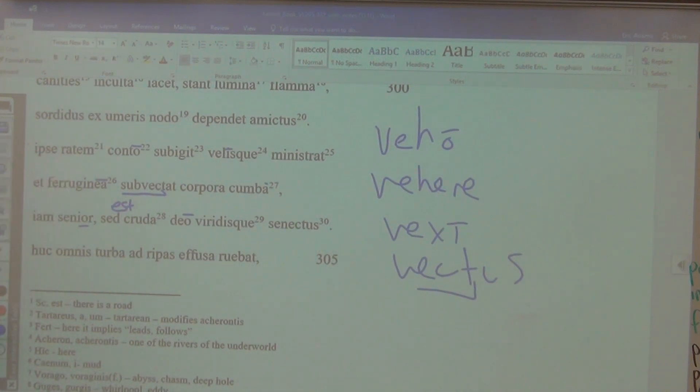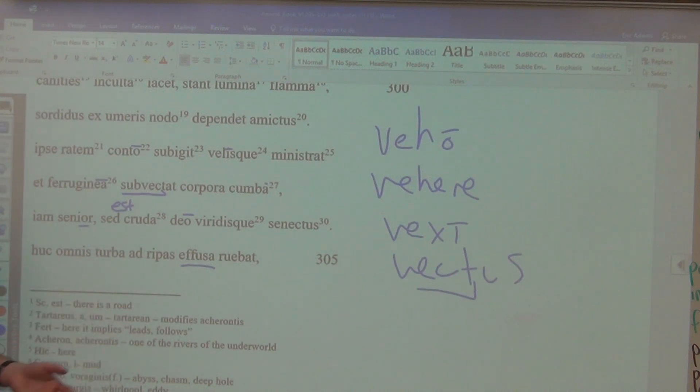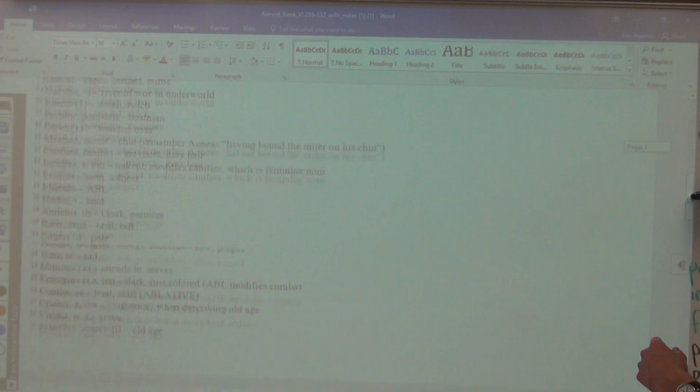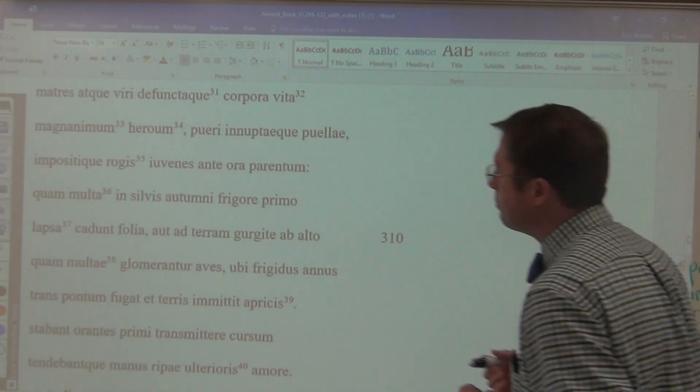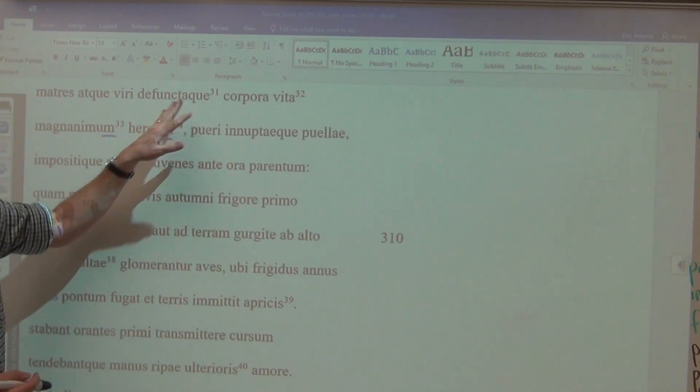To this place, indicating where he is located, the whole crowd, having been poured out, fundo fundere fudi fusus meaning to pour out, a perfect passive participle modifying turba, the crowd having been poured out, they were rushing towards the banks. And so he sees a whole bunch of the various different shades or ghosts in the underworld. And then we have a list as to who these people are that he sees: mothers and husbands.